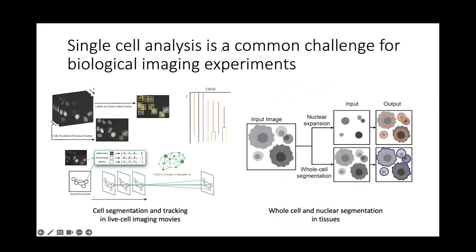What is needed in both spaces are computational primitives. For live cell imaging, we need primitives that can segment cells, track cells, and construct cell lineages for commonly imaged cell lines. For multiplex tissue imaging, we need computational primitives that can reliably perform nuclear and whole-cell segmentation across all the different imaging platforms in use and all the different tissues being imaged.